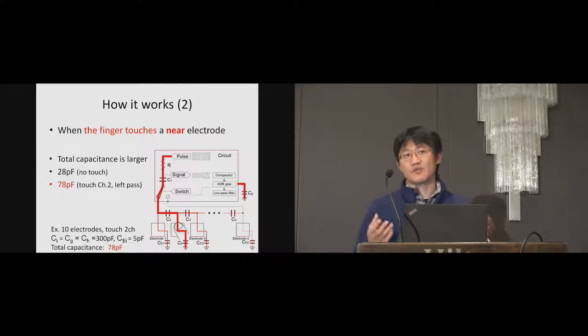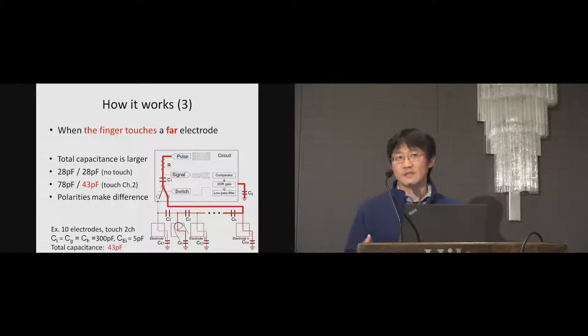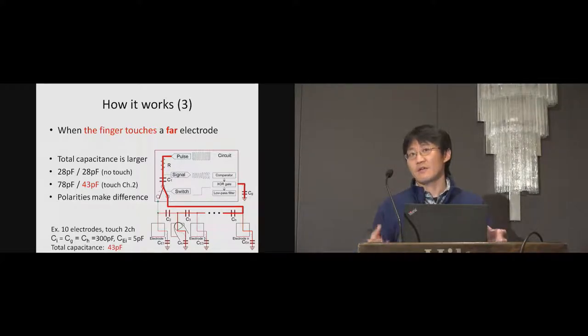This figure illustrates the situation when the finger touches. The left path is selected, that means the touched electrode is near the circuit. Assuming CH is 300 picofarad, the total capacitance is 78 picofarad. After a while, the switch changes the polarity. The total capacitance is calculated as 43 picofarad, which is larger than no touches and smaller than other polarity. So when the finger touches the electrode, the total capacitance increases, but the pair of capacitances differs according to the touched electrodes.